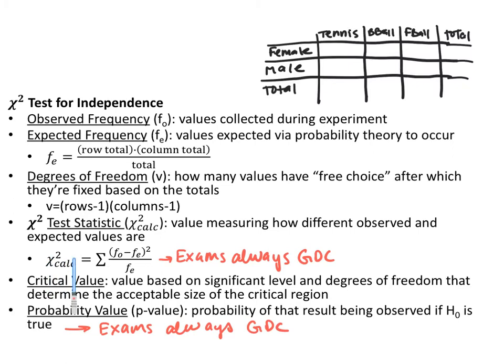The chi-squared test statistic, represented as chi-squared calc, can be calculated by hand — which you'd only do on an internal assessment. On exams, we always use the graphing calculator. By hand, you take each observed value, subtract the expected value, square it, divide by the expected value, and sum all of those up. Remember, sigma means sum.